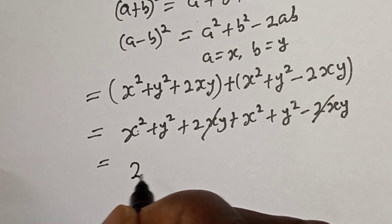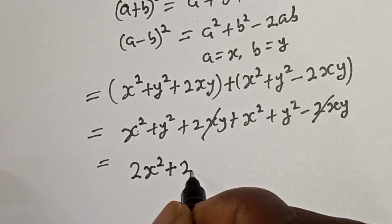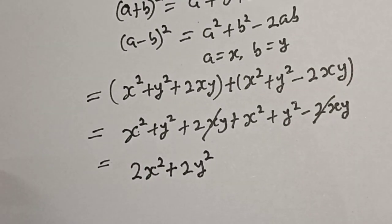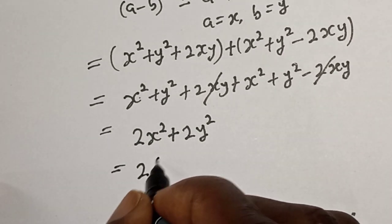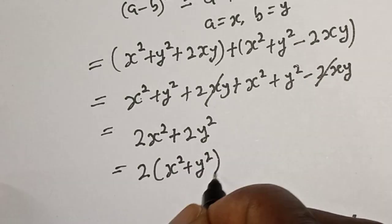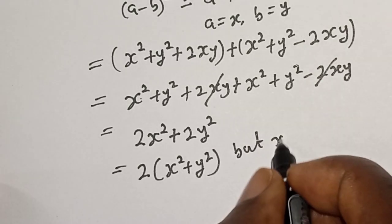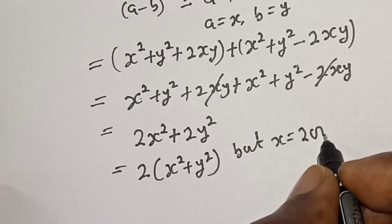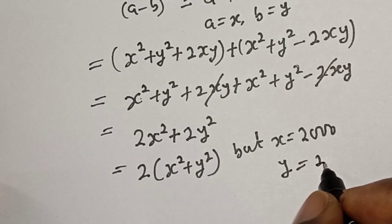This is equal to 2x square plus y square plus y square, 2y square. Then 2 is common, let's bring it out: we have 2 bracket x square plus y square. But we know that x is equal to 2000 and y is equal to 22.